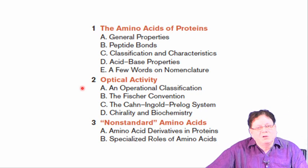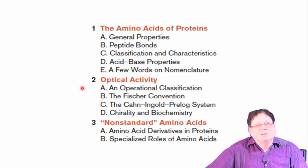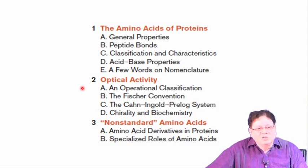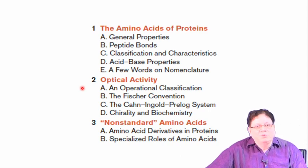The reason I mention this is that sometimes it is difficult to write the DL system, but it is much easier to show the RS system. So if you are asked to write different L amino acids containing peptides very quickly, the best way is to check the RS system of the alpha carbon.